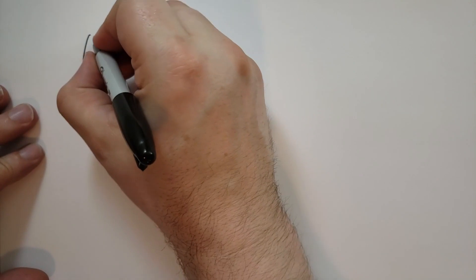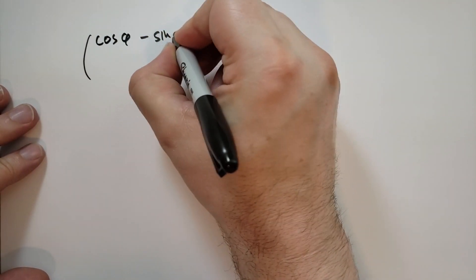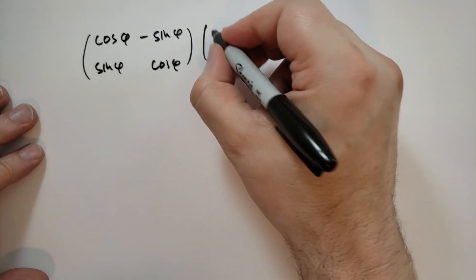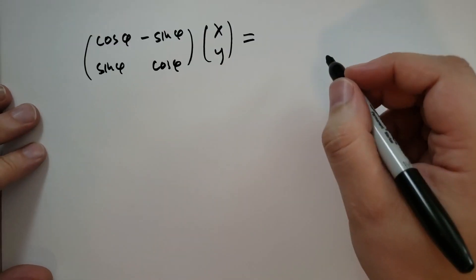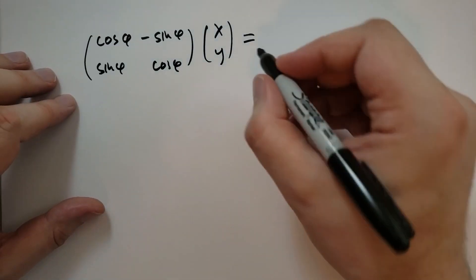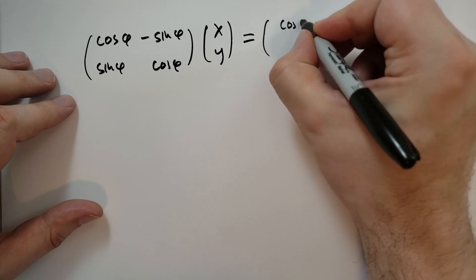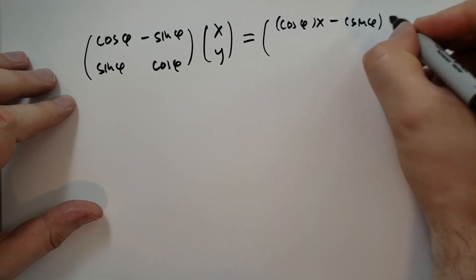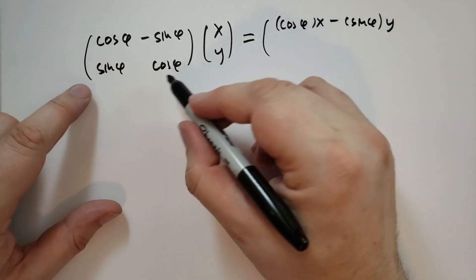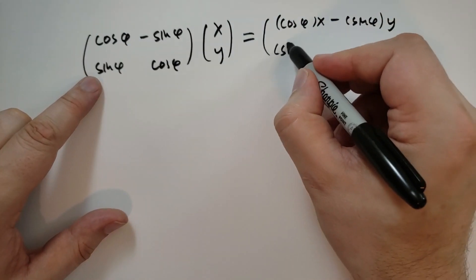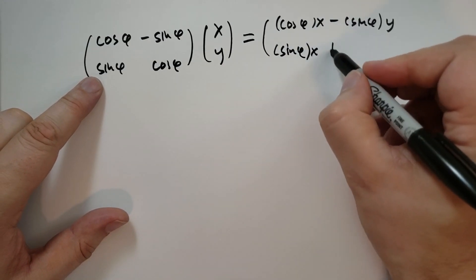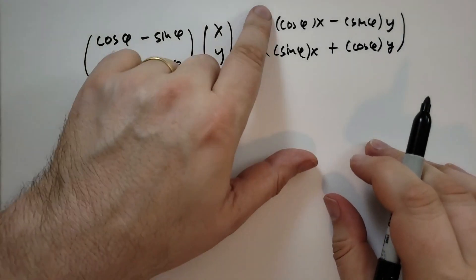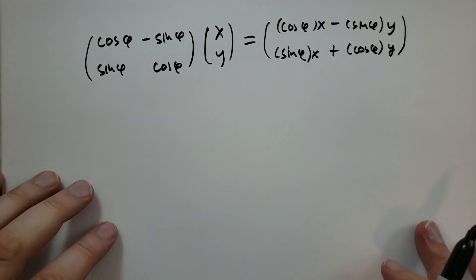So we start, we have cosine of phi, minus sine of phi, sine of phi, cosine of phi times x, y. And the way you multiply matrices is, this will end up being cosine of phi times x, minus sine of phi times y. So we take x times this one, y times that one, and now we take sine of phi times the x coordinate, plus cosine phi of y. And that will be your new x, y coordinates. And that's how it's done.